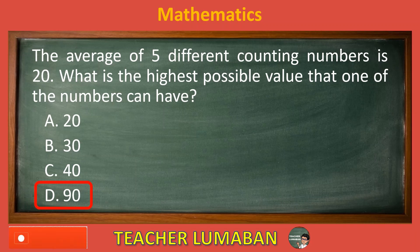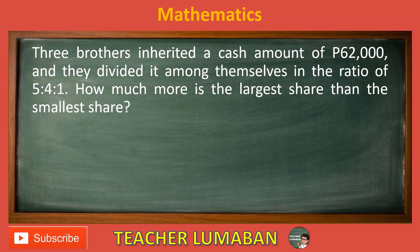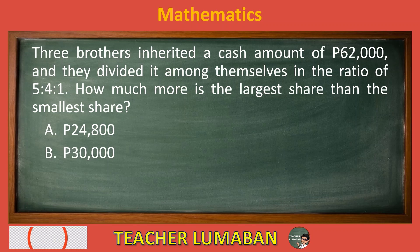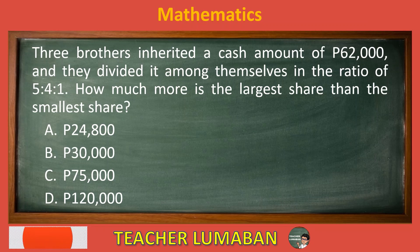Three brothers inherited a cash amount of 62,000 pesos and they divided it among themselves in the ratio of 5 colon 4 colon 1. How much more is the largest share than the smallest share? Letter A: 24,800 pesos. Letter B: 30,000 pesos. Letter C: 75,000 pesos. Letter D: 120,000 pesos.